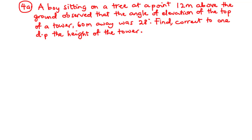A boy sitting on a tree at a point 12 meters above the ground observed that the angle of elevation of the top of a tower 60 meters away was 28 degrees. Find, correct to 1 decimal place, the height of the tower.